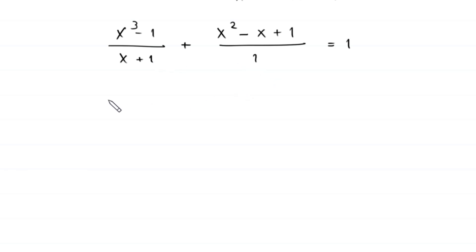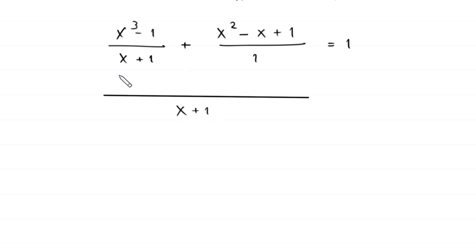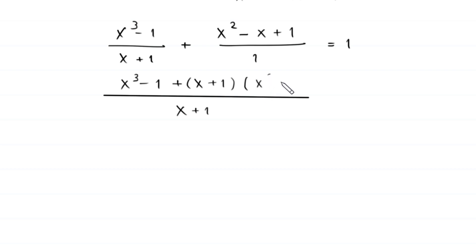The LCM of (x + 1) and 1 is (x + 1). So x³ - 1 will come here, and we multiply x + 1 by this expression. This will become (x + 1)(x² - x + 1) equals 1.